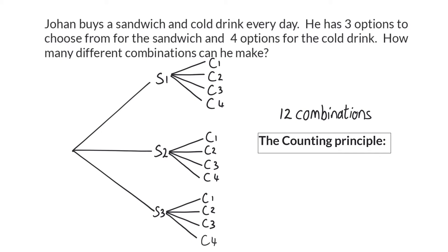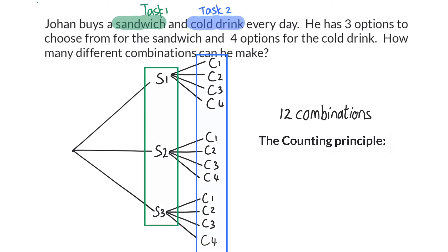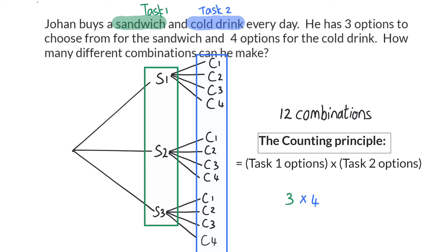When using the counting principle, it is not necessary to write out each possible combination. All we need to do is see this as two different tasks, and then simply multiply the number of options per task with each other. So here we can multiply the three options for sandwiches with the four options for cold drinks to immediately get to our 12 combinations.